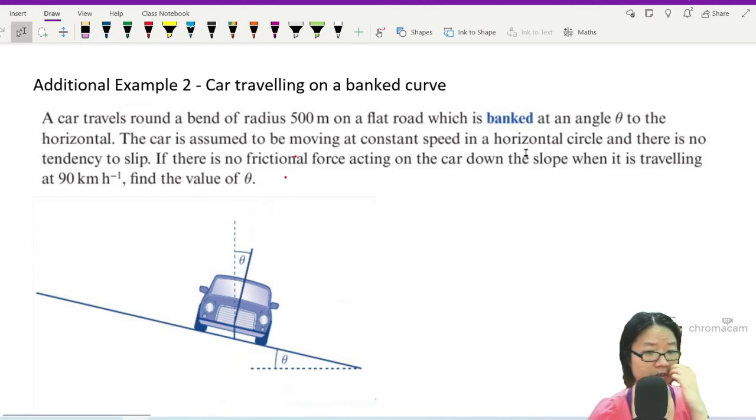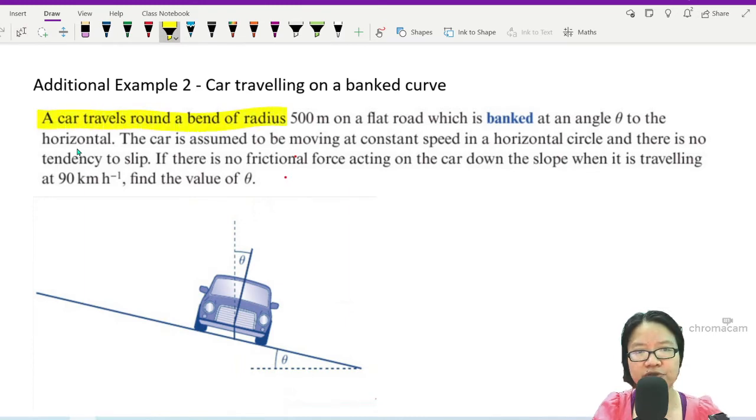Okay, this is a calculation example, a very straightforward one. It says that a car is traveling around a bend of radius 500 meters on a flat road which is banked at an angle theta. Pretty classic.